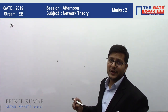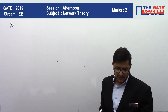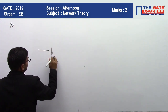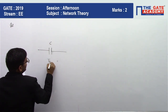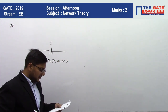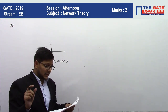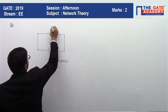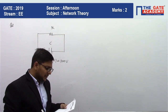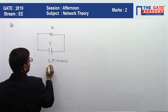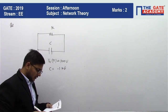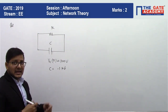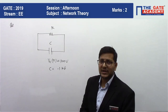My name is Prince Kumar. I am going to discuss a GATE 2019 problem belonging to network analysis. The question is: a capacitor C has been initially charged to 100 volts and is connected across a resistor of 1kΩ. The value of capacitance C is 0.1 microfarad. Find the time in milliseconds at which the capacitor voltage reaches 1 volt.